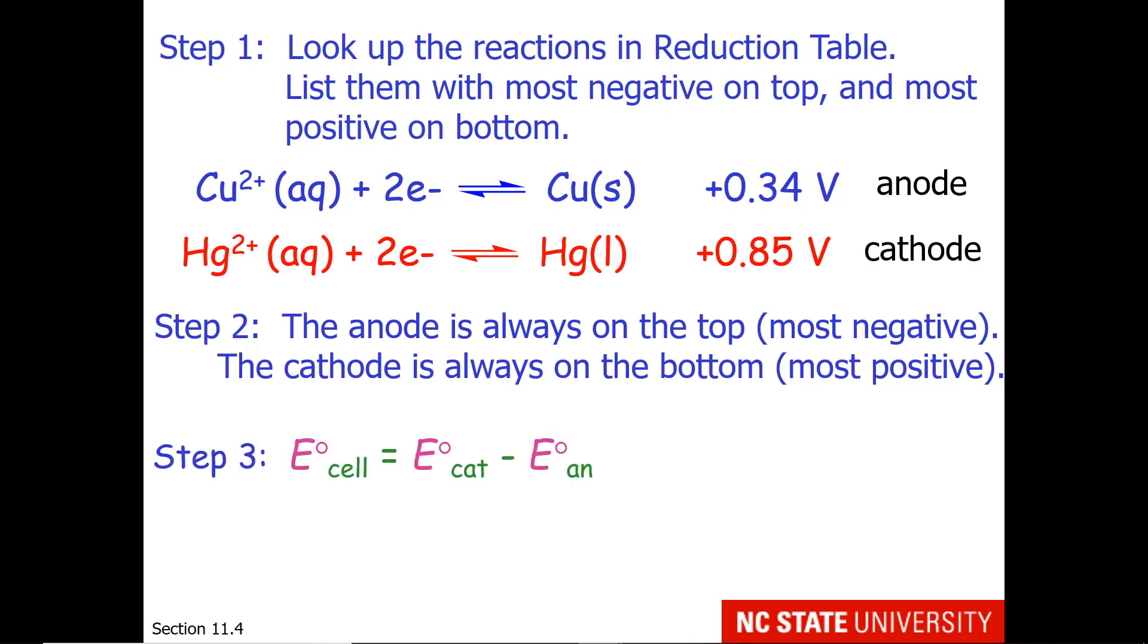Step 3. You'll probably be asked the voltage of the cell. Remember that E°cell equals E°cathode minus E°anode. Right now we're working at standard state, which is why the not is there. So we have our cathode and our anode assigned and our voltage is +0.85 minus a positive 0.34. So this is a 0.51 volt battery at standard state.